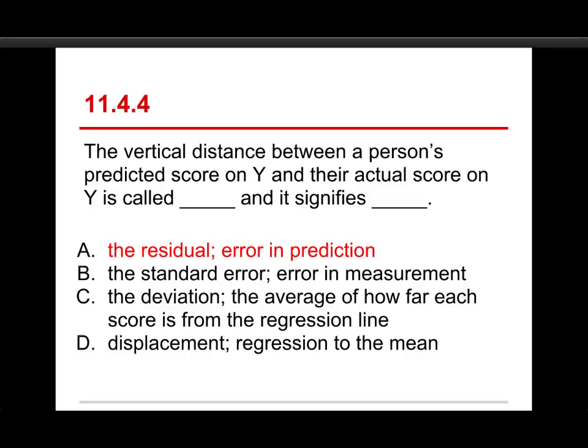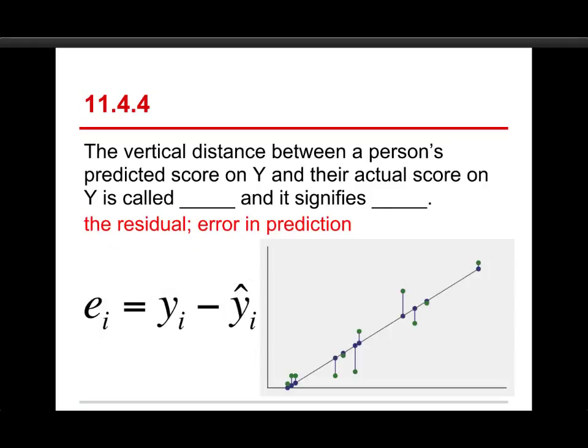In fact, this should be pretty easy because the symbol for the residual is E, which stands for error. And here's the formula. We've got E, so the error score or the residual for person I. You number them from one to however many and you just use I as a generic stand-in for one, two, three, four.